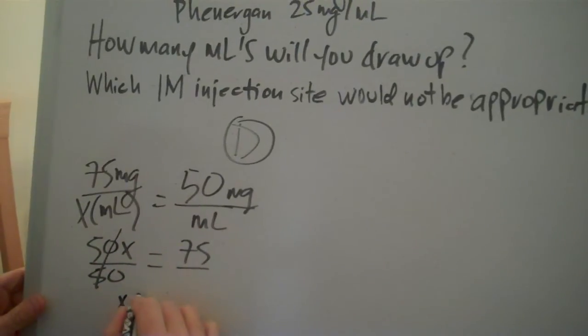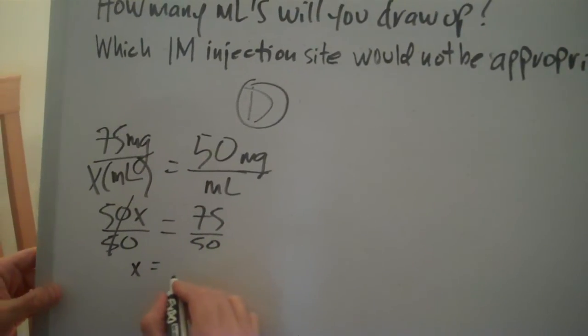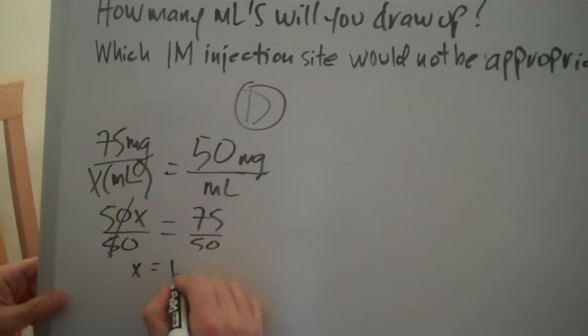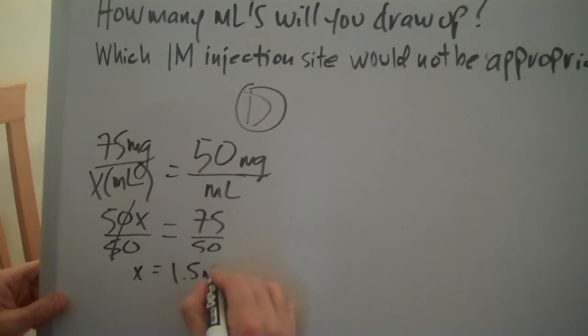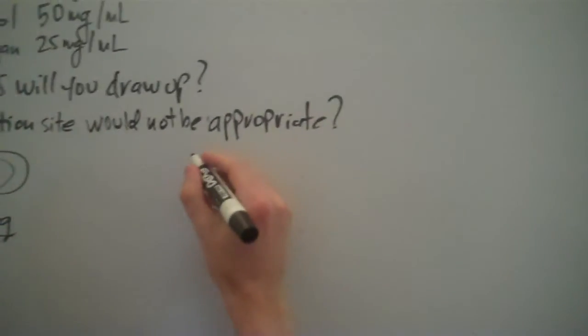These cancel out. x equals 75 over 50. And when you divide, you're going to get 1.5ml. We're moving on to Phenergan.